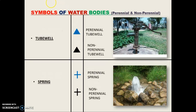A tubewell can be either perennial or non-perennial. If it is blue in color, it is a perennial tubewell — having water throughout the year. If it is black in color, it is a non-perennial tubewell. A spring is shown as a plus shape — it is a place where water emerges from the earth. If the spring symbol is blue, it is perennial; if black, it is non-perennial.